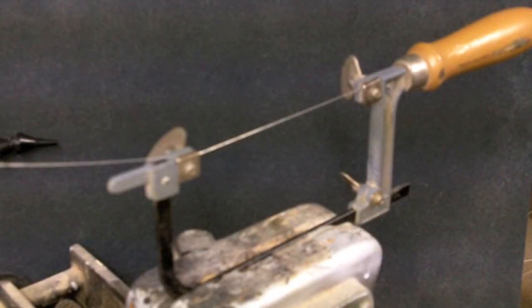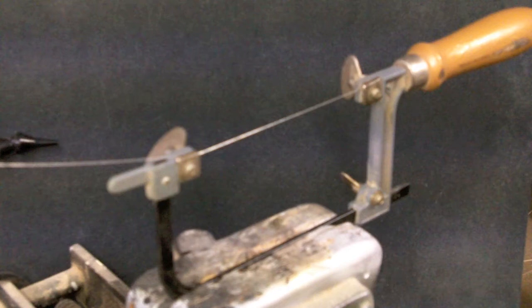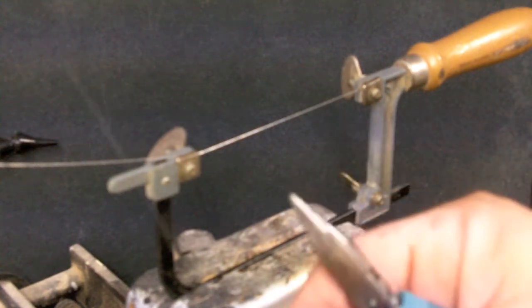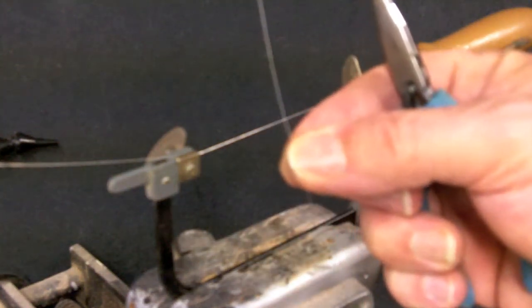Alright, this little video is going to be how to make a wire pigtail bearing for an indoor duration model airplane. Making this for a mini stick, so I'm going to be making the pigtail bearing out of 010 music wire. The prop shaft will also be 010 music wire.